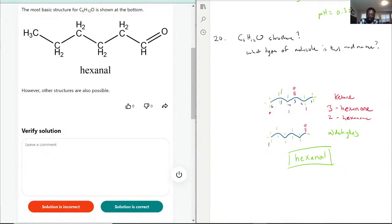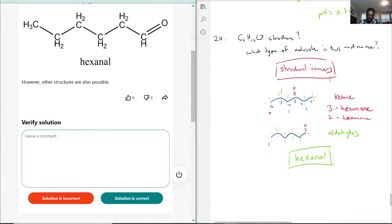There's probably other structures out there, which is why they're called structural isomers. And these are just examples of structural isomers for C6H12O.